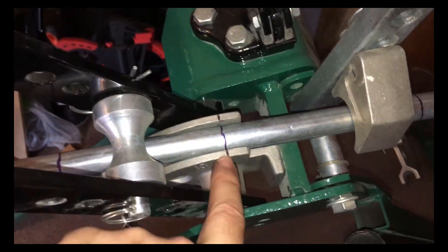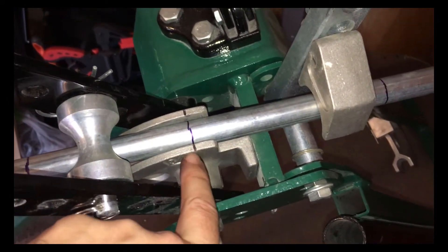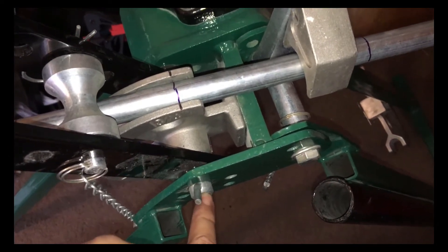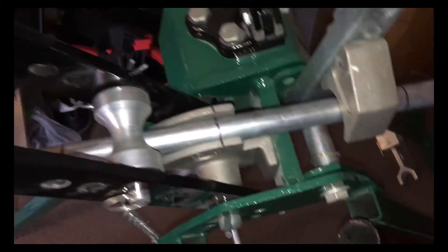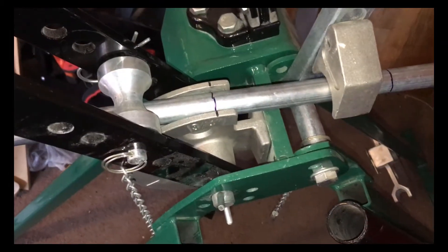This is directly in line with the center of the conduit bender here, going through the radius, so we're going through the center of it. We're going to bend this up to 30 degrees using the ruler and see how we get on.